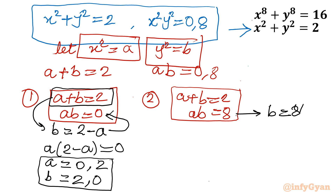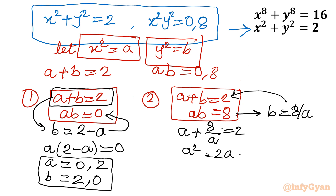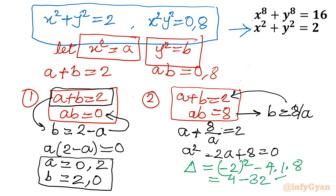For System 2 (a + b = 2, ab = 8): substituting b = 8/a gives a + 8/a = 2, which becomes the quadratic a² − 2a + 8 = 0. Checking the discriminant: Δ = (−2)² − 4(1)(8) = 4 − 32 = −28, which is negative. Since we need real solutions, we reject this system.